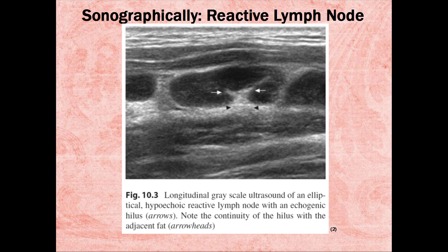Here is a sonographic image of a reactive lymph node. The lymph node is filled with lymph, and this patient might be fighting off an infection. It is difficult to find non-reactive lymph nodes sonographically. This is a longitudinal, grayscale ultrasound of an elliptical, hypoechoic reactive lymph node with echogenic hilus arrows. Note the continuity of the hilus with the adjacent fat arrowheads.